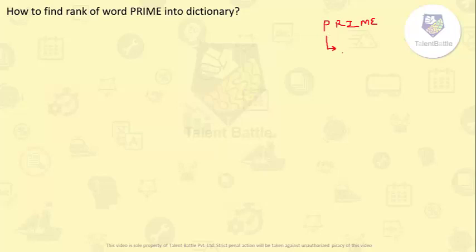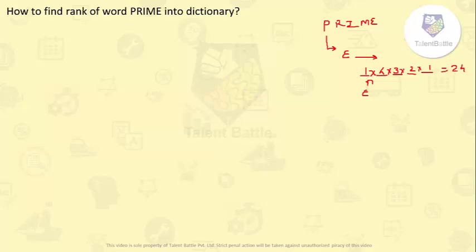Before P, how many words will come? Those words which will start with E. As you can check, there are a total of five letters. If E is at the first position, the next four letters can be any arrangement, so it will be 4 × 3 × 2 × 1 = 24. So calculate the number of words starting from E, then from I, then M — you need to calculate all possible combinations which can come before PRIME. But it will take a lot of time.